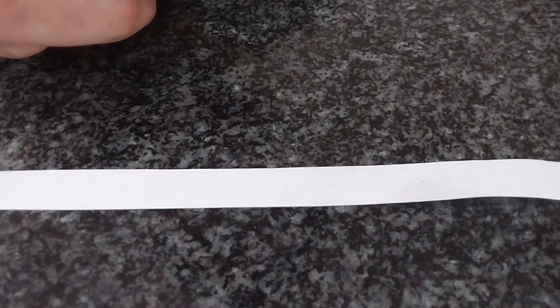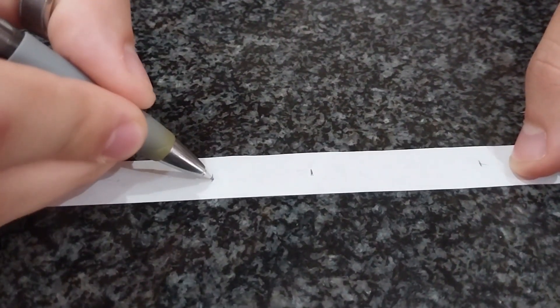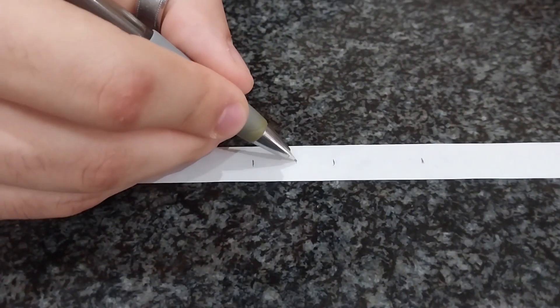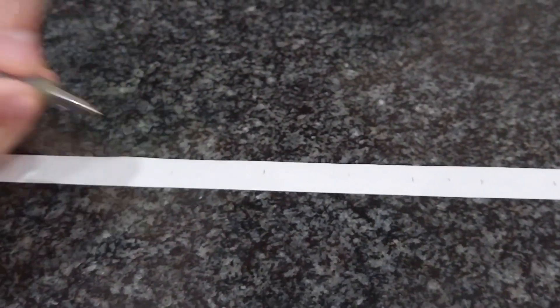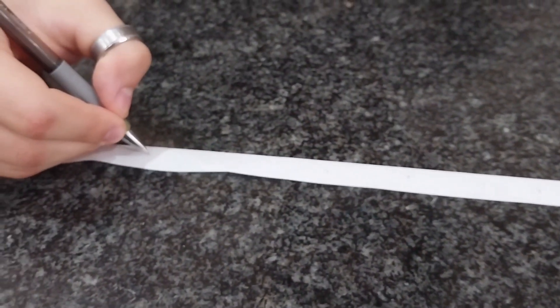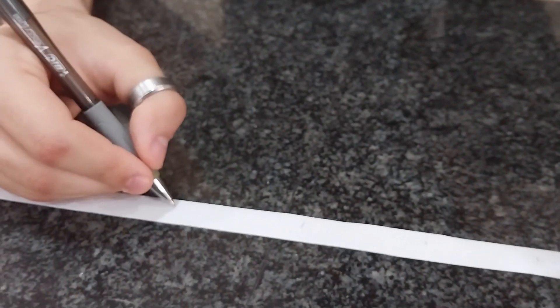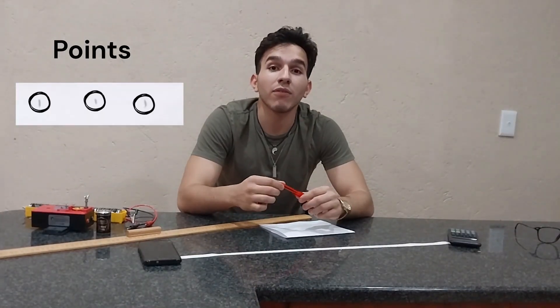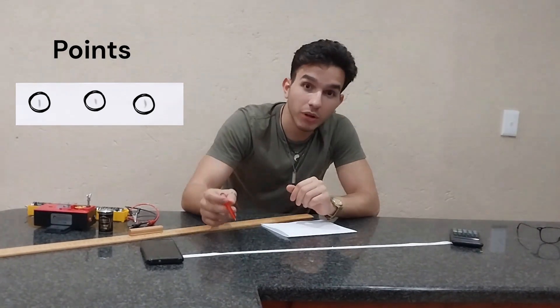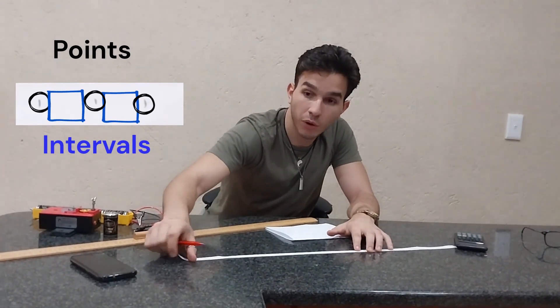Now I'm going to darken the points a little bit so they're clearly visible. After darkening the points, we have 15 points but 14 intervals. Now I'm going to measure the distance between the first point and the last point.